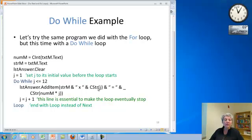So here's the same program we did before, the one that prints the multiplication table, but this time I'm doing a do-while loop instead of a for loop. So let's take a look here at exactly what we're doing. I'm starting out the same way by reading my number from a text box, converting it to a string, and clearing the list box.